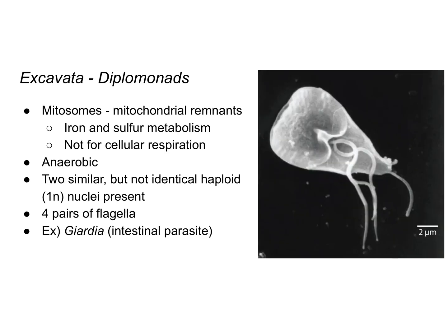The diplomonads have mitosomes, which are mitochondrial remnants, so they don't have mitochondria like other eukaryotic cells do. These mitosomes are involved in iron and sulfur metabolism. They are not used for cellular respiration, but mitochondria are in other eukaryotes. These protists are anaerobic, meaning they can survive without oxygen.